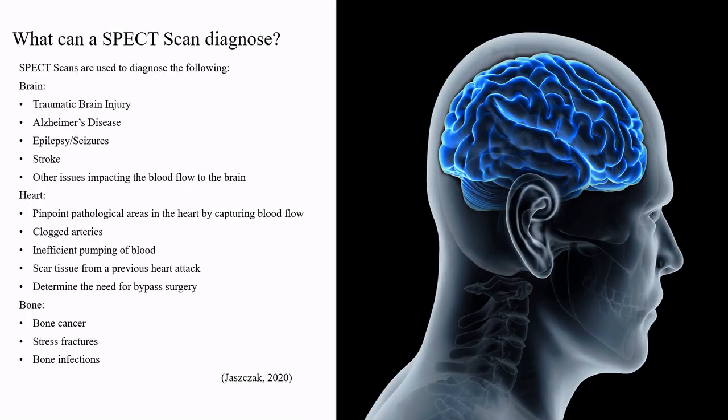SPECT scans are used to diagnose the following. For the brain: traumatic brain injury, Alzheimer's disease, epilepsy or seizures, stroke, and other issues impacting blood flow to the brain. For the heart: pinpointing pathological areas by capturing blood flow, clogged arteries, inefficient pumping of blood, scar tissue from a previous heart attack, and determining the need for bypass surgery.